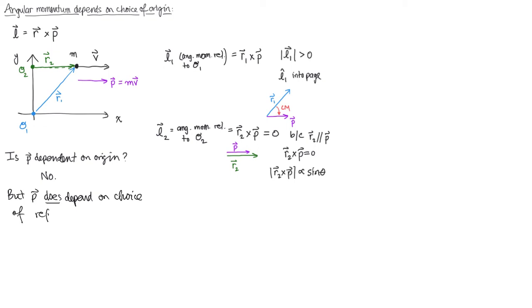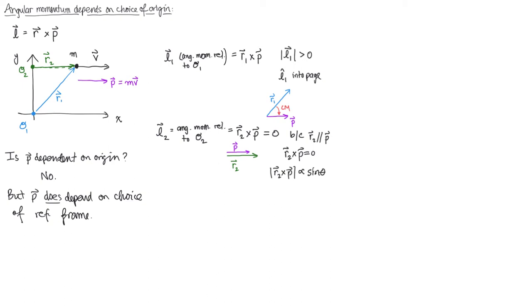In other words, once you choose a reference frame, that defines a momentum, but it does not define an angular momentum. You can always choose a different reference point within your frame of reference to calculate your angular momentum with respect to it. The bottom line is that whenever we work on angular momentum problems, we always must specify the origin.